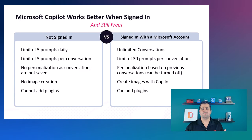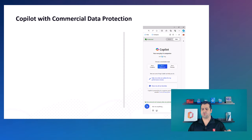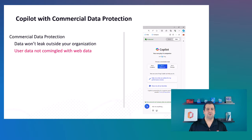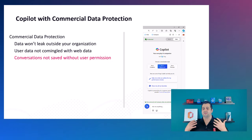Since a lot of you watching my YouTube channel come from the business environment, I also wanted to talk about Copilot with commercial data protection. What does commercial data protection actually mean? First of all, the data will not leak outside of the organization and your user data will not be commingled with web data. With Copilot with commercial data protection, the conversations are not saved and Copilot will not use any of the information you give it to train the AI model.